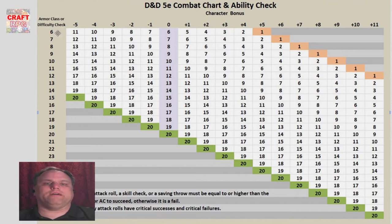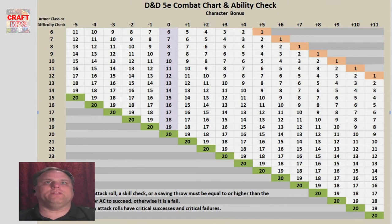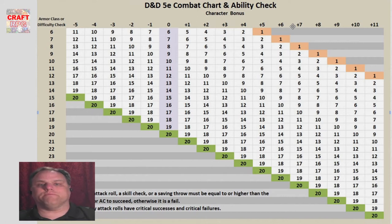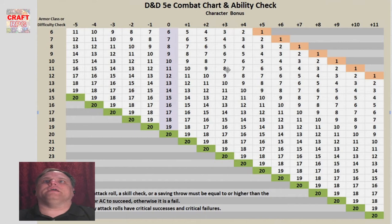Down the left hand side is the armor class or difficulty check that they're trying to hit. Now they can either know this, or the DM can know that number and just have them tell them that number. Along the top is the character's bonus, whether it's their attack bonus, their saving bonus, or their skill check bonus — whatever the bonus is. Those are the top numbers up here. And then finally, all the numbers in white — that's the dice roll.